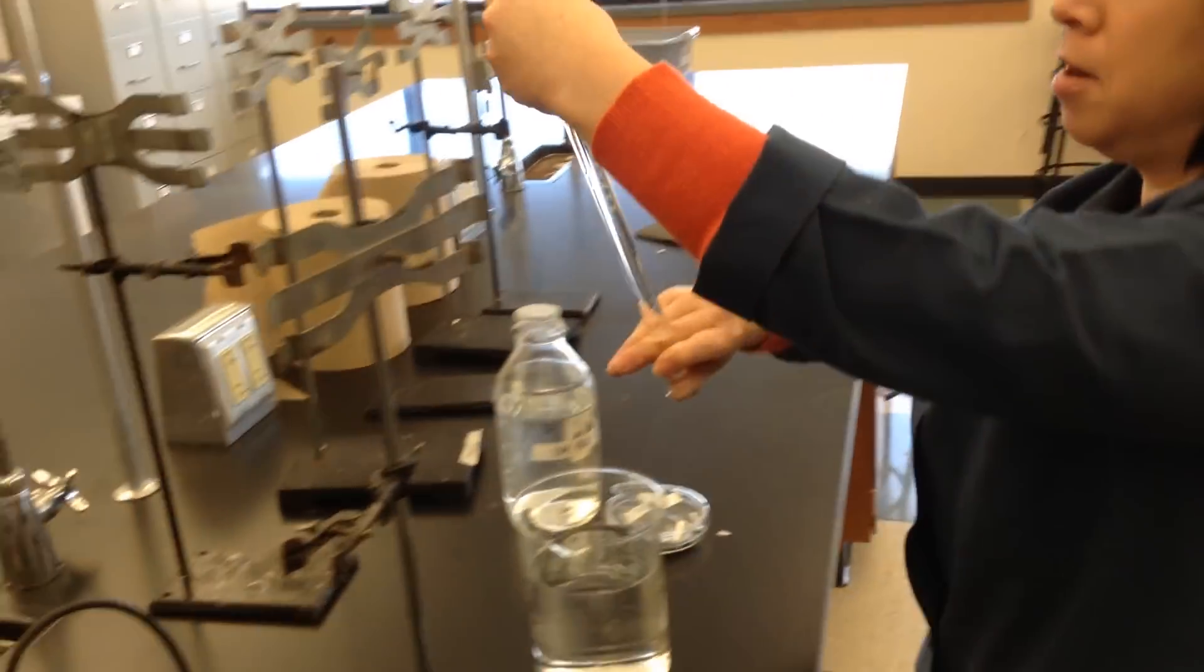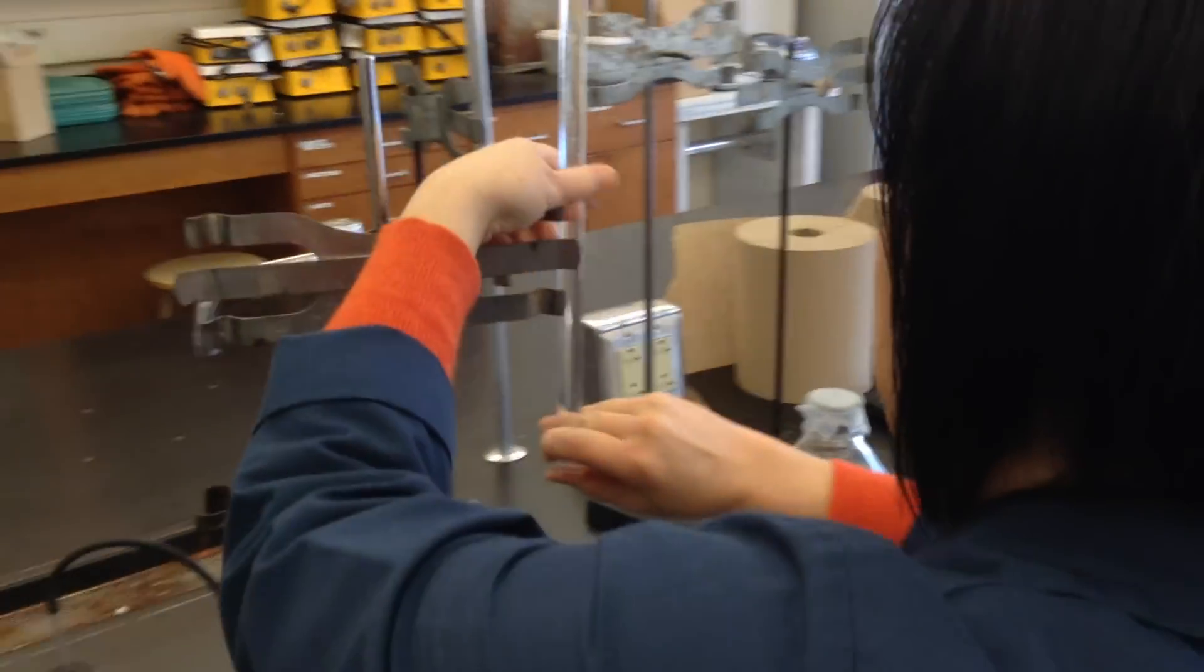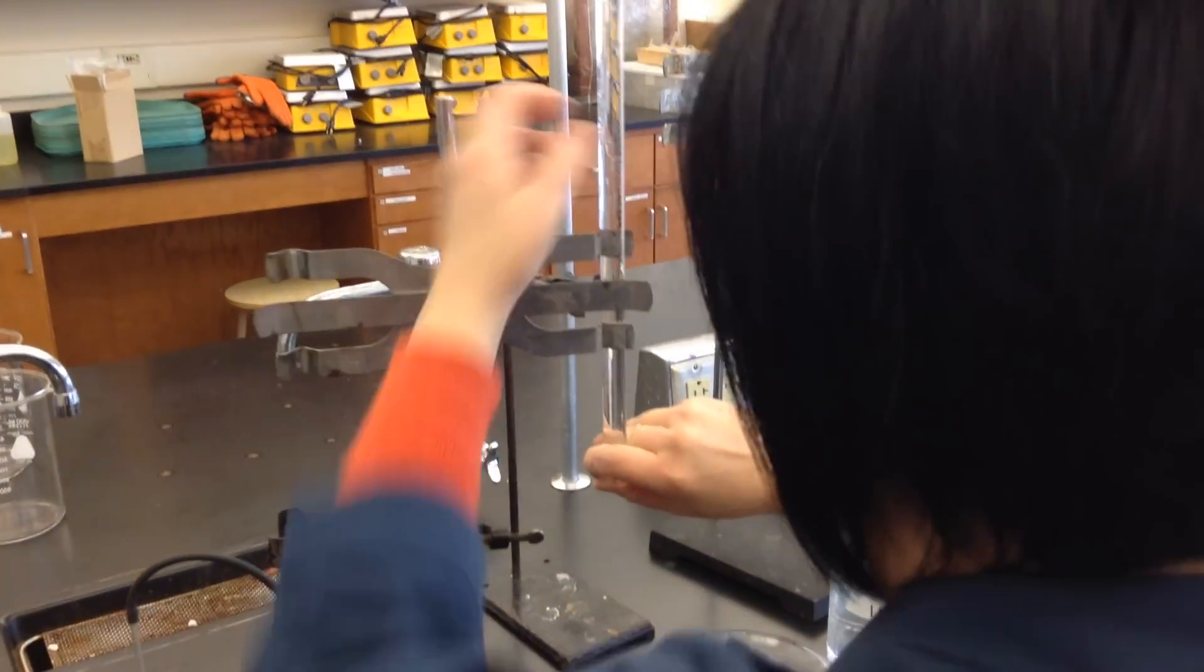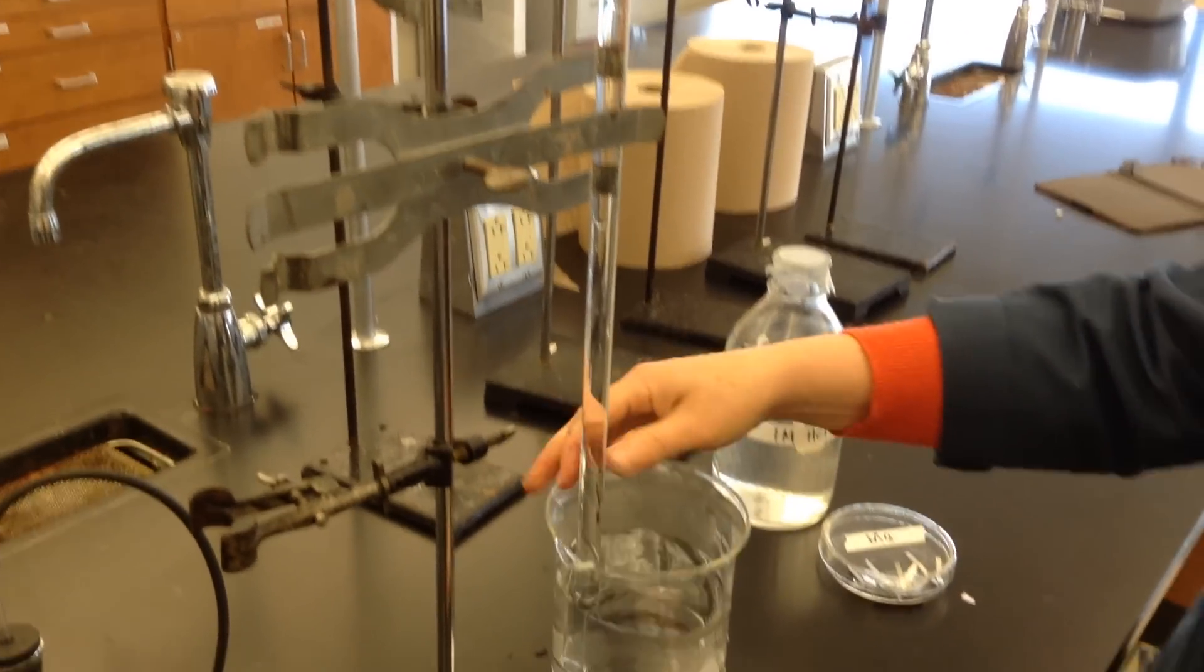You put your thumb over this, upside down, clamp it into place. This is where an octopus lady would come in handy. Keep your thumb on it, put it down in there, and no liquid escapes.